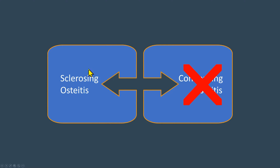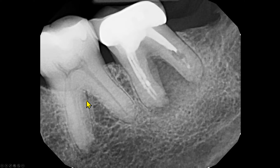Sclerosing osteitis is a better term — do not use the term condensing osteitis. The bone does not get condensed or compressed. Similarly, there is scleroderma but nothing called condensoderma. There is atherosclerosis, not atherocondensosis. Sclerosis means the tissue becomes harder or is replaced by denser tissues. Coming back to the periapical radiograph: this part is the rarefying osteitis, this part is the sclerosing osteitis — two sides of the same coin.